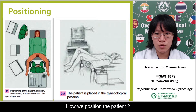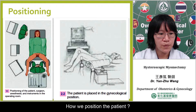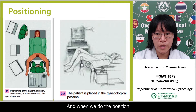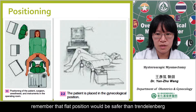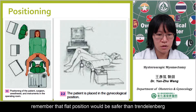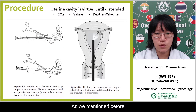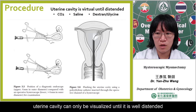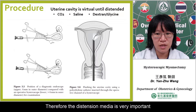How do we position the patient? Dorsal lithotomy is usual. And when we do the procedure, remember that a flat position will be safer than Trendelenburg. As we mentioned before, the uterine cavity can only be visualized until it is well distended. Therefore, the distension media is very important.